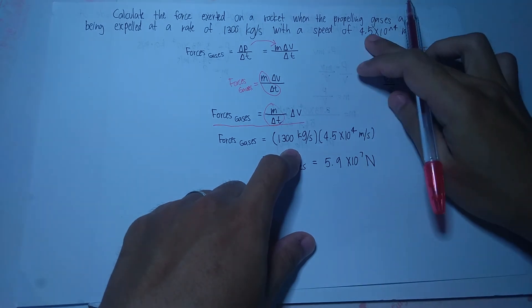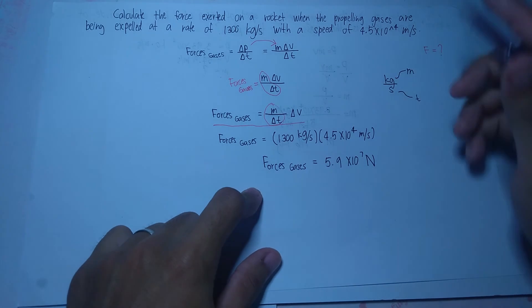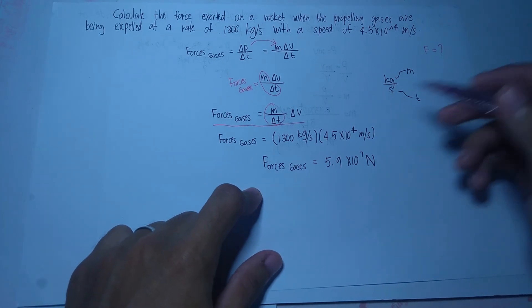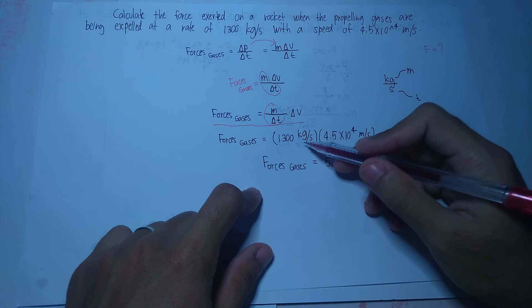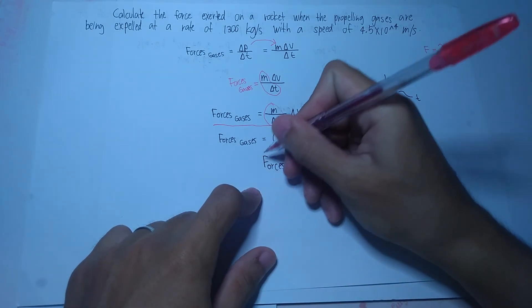At yung change in velocity, i-substitute lang natin yung 4.5x10 raised to 4 meters per second. At after nyan, i-multiply lang natin itong dalawang quantities na ito. So therefore, mag-a-arrive tayo sa sagot na ito.